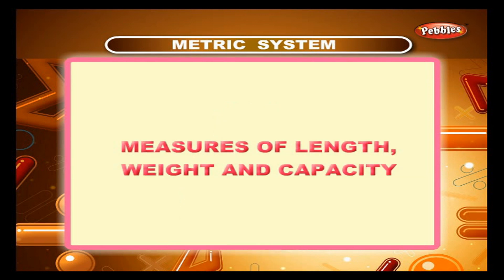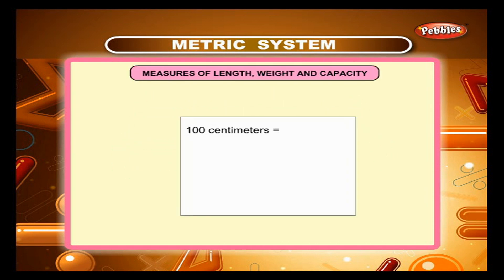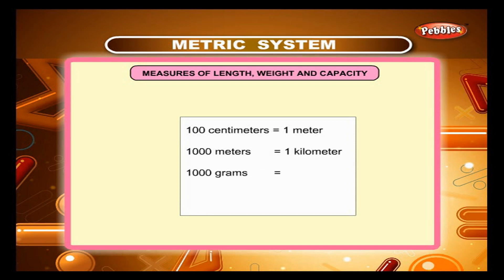Measures of Length, Weight and Capacity: 100 cm is equal to 1 m; 1000 m is equal to 1 km; 1000 g is equal to 1 kg; 1000 ml is equal to 1 litre.